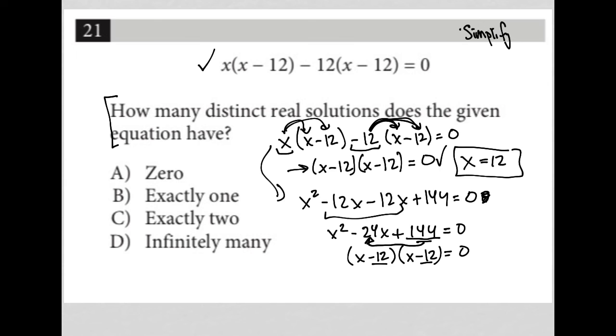So, how many distinct real solutions does the given equation have? It has exactly one. And that exactly one answer is x equals 12.